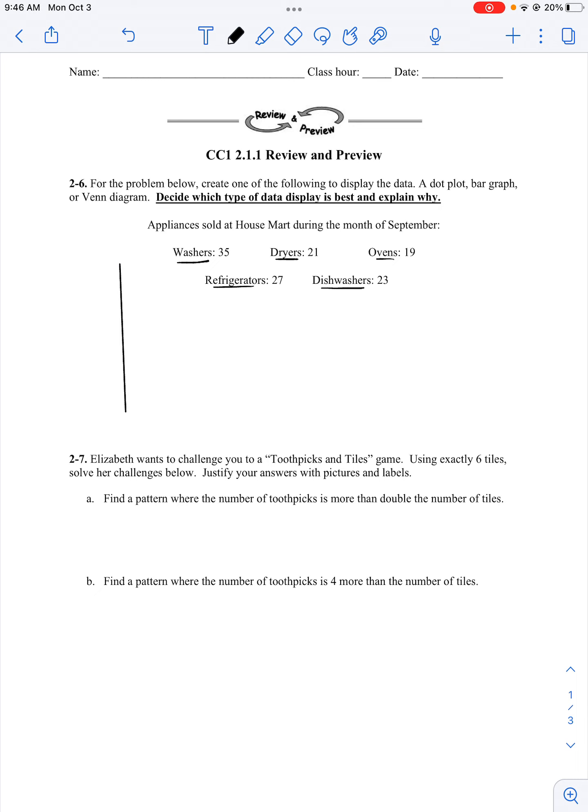So I'm going to create a bar graph. So I have washers, dryers, ovens, refrigerators - I'm going to shorten that - and then dishwashers. So on my axis here I'm going to have 10, 20, 30, 40. And I'm doing that because all my numbers are fairly high. And then I know like 15's there, 25's there, and 45's there.